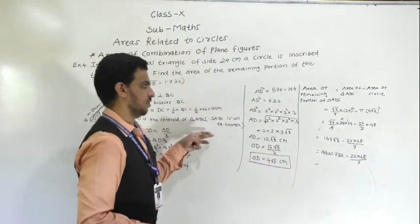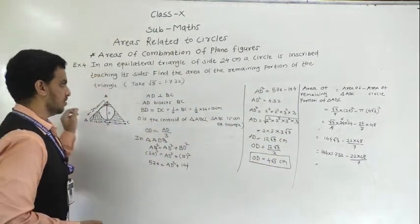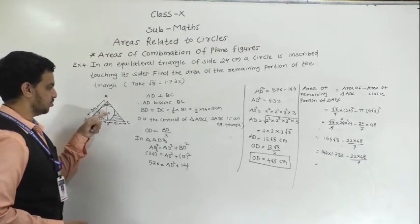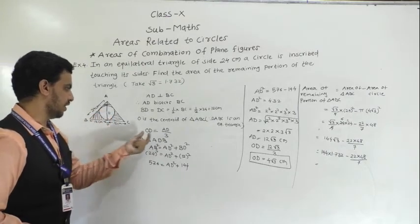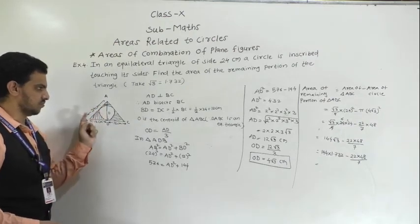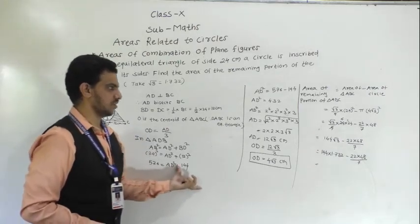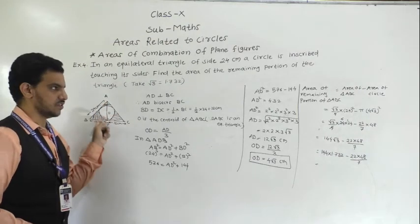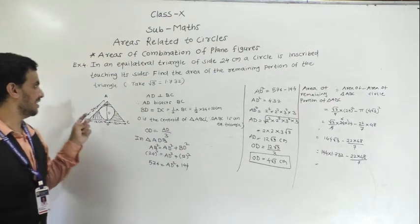We will get the area of the remaining portion of triangle ABC. Since in an equilateral triangle the incenter and centroid coincide, OD = AD/3 because the centroid divides the median in the ratio 2:1. Use this to find OD, then compute area of triangle minus area of circle.